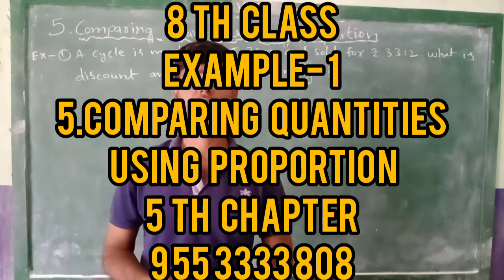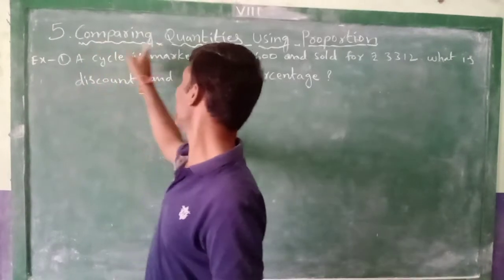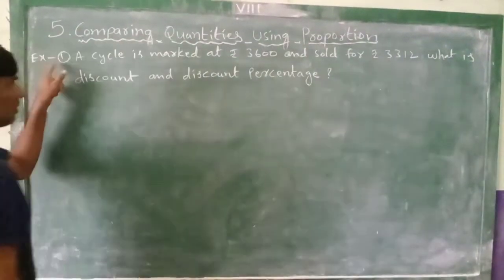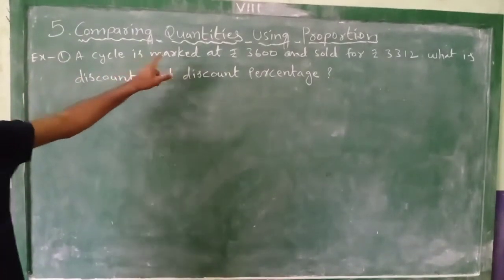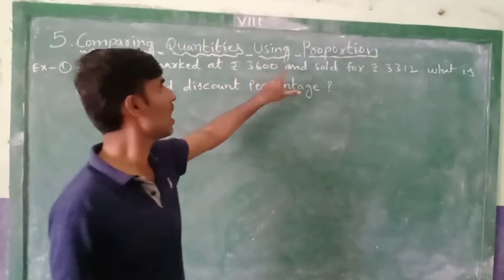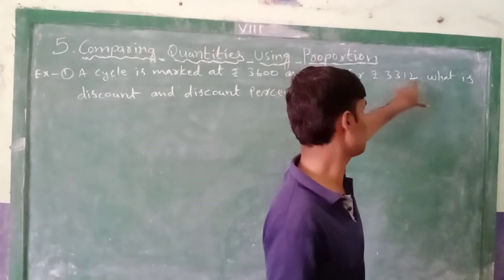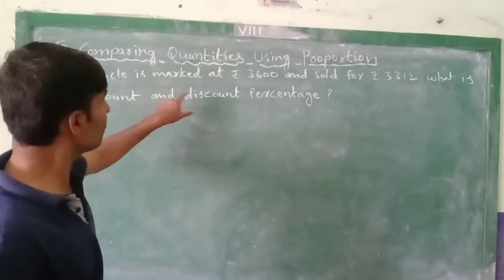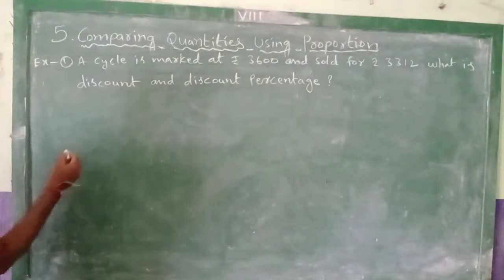Now we are discussing 8th class, 5th chapter: Comparing Quantities Using Proportion, Example 1. See here, a cycle is marked at Rupees 3600 and sold for Rupees 3312. What is the discount and discount percentage? First, you write it here.